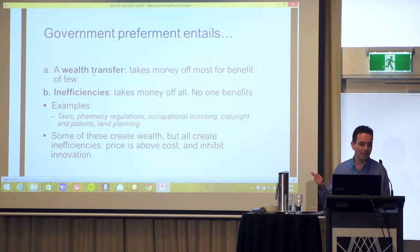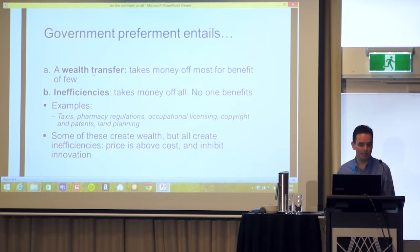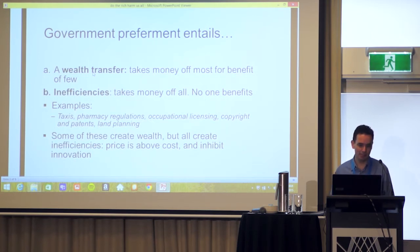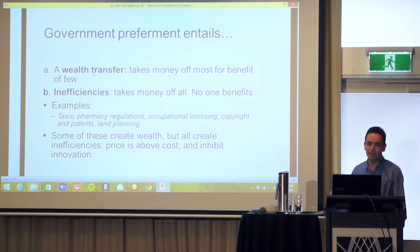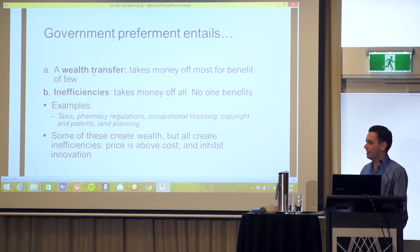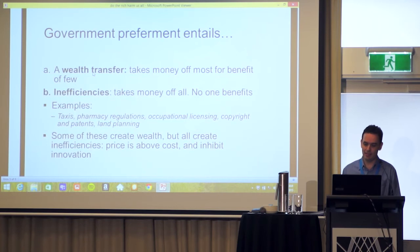There are quite a few examples: taxi regulation, pharmacy location and ownership regulations, occupational licensing — particularly medical specialists — copyright and patents, and land planning. Some of these regulations create wealth for certain people, particularly around land planning. But all of these regulations create inefficiencies — specifically, prices end up being above cost and they inhibit innovation.